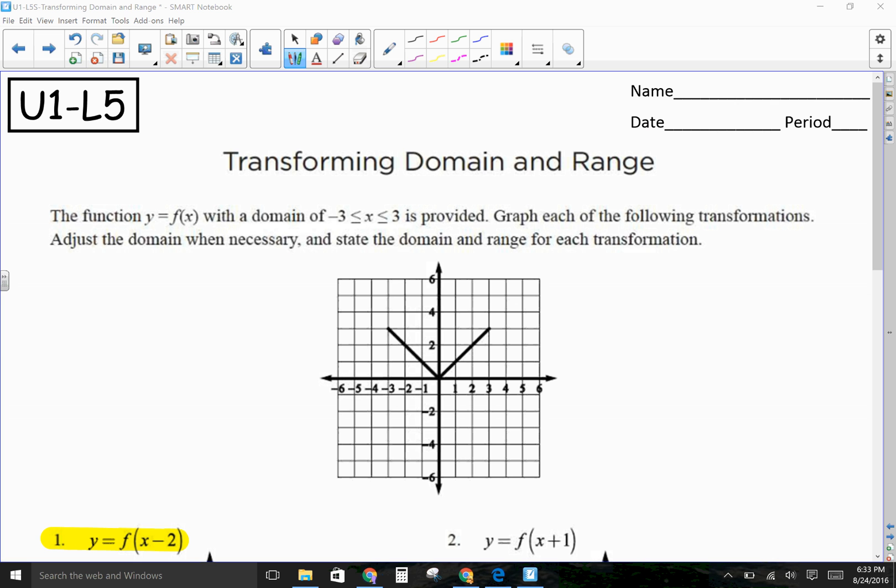And for each of these, we're going to talk about the domain and range. They give it to you in this set builder notation. We're going to use our interval notation that we have been using. So, our domain, according to what they told us, is from negative 3 to 3. Now, how do you see that is you're looking at this point on the graph, which is farthest to the left. And the x value is negative 3. And I look at this point, which is farthest to the right. And that x value is 3.